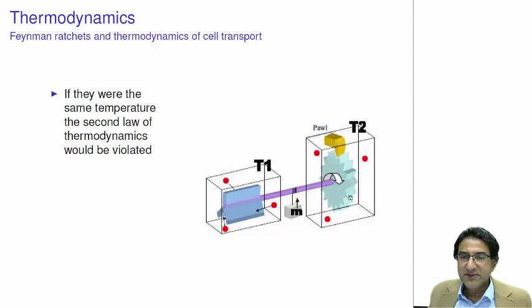If they were at the same temperature, the second law of thermodynamics would be violated, meaning to say that we could get work out of the system for nothing. Or the entropy of the universe itself would decrease. That's the second law. He proved that that would be impossible if these two things were at the same temperature.